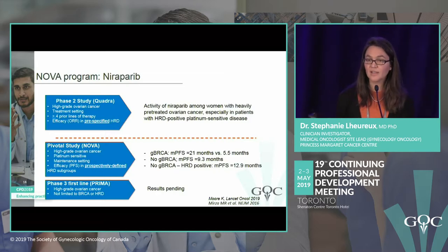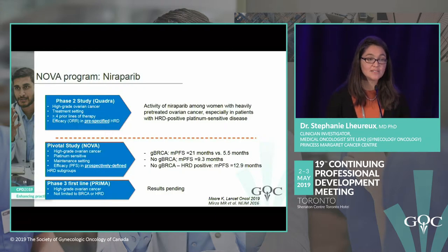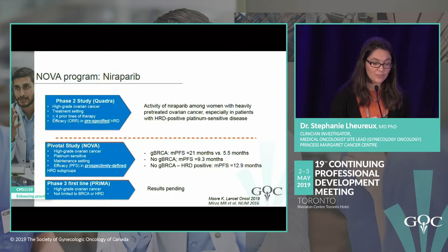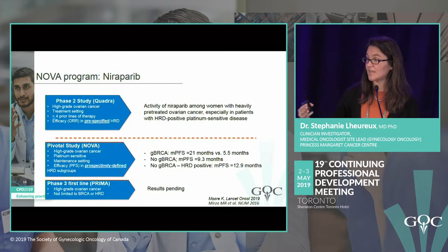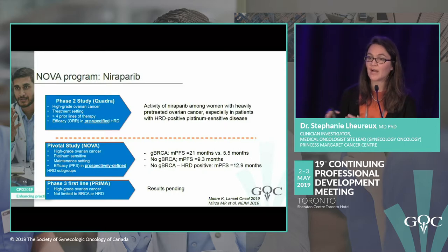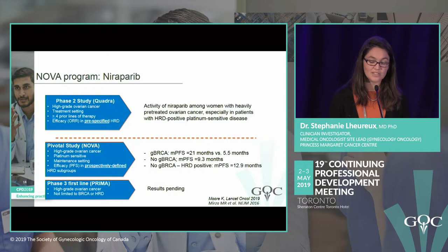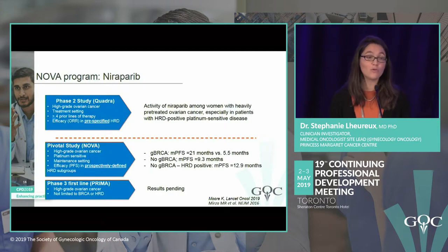For non-germline BRCA patients classified as HRD positive by a specific test, PFS was nearly 30 months — demonstrating benefit beyond BRCA. Patients without BRCA and without HRD had a PFS of 9 months. Based on these results, niraparib was approved in the US for all patients responding to platinum-based chemotherapy regardless of BRCA status.